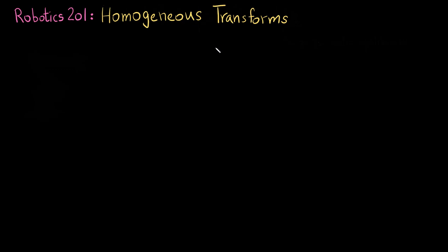Welcome back to Engineering Simplified. In today's video, we are going to be talking about homogeneous transformations for 3D robots. In our previous videos in the RobotX 101 series, we talked about homogeneous transformations for 2D robots. If you haven't watched those, I would recommend starting with the 2D robots first and then coming to the 3D robots, because almost all the concepts are the same — it is just a notch up.